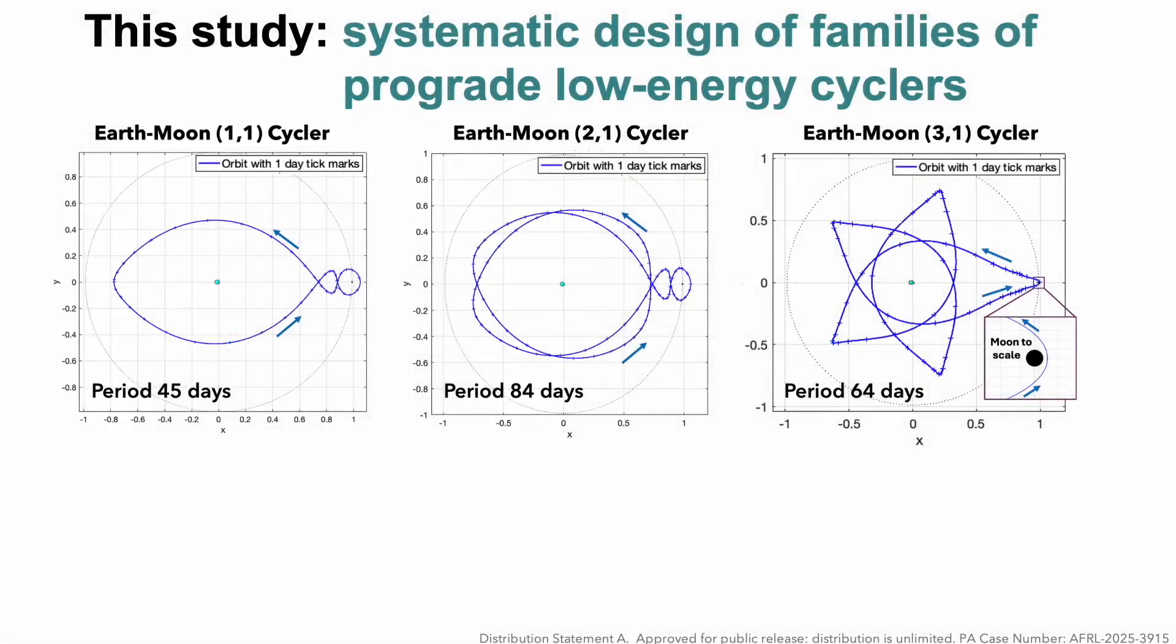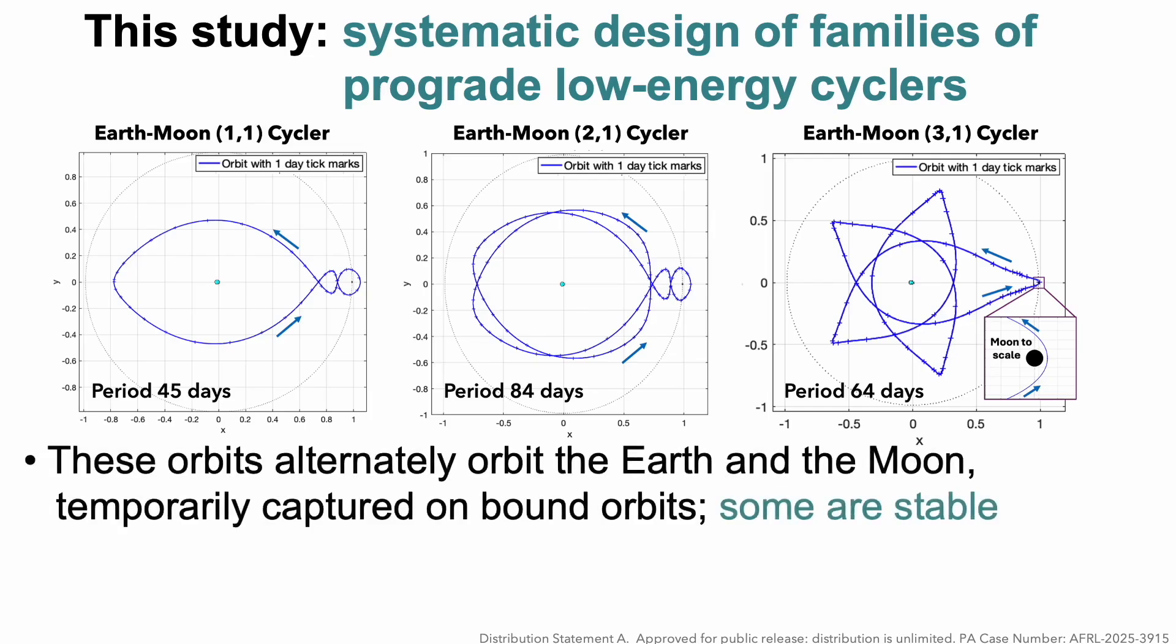We call them stable, prograde, low energy cycler orbits. These aren't just cyclers that perform flybys. These are three-body solutions where the spacecraft alternately enters orbit around each body, a true multi-orbiter.